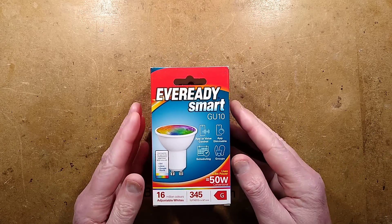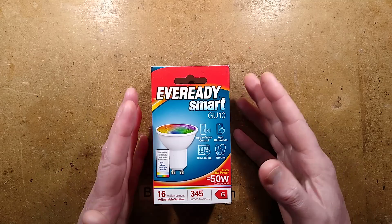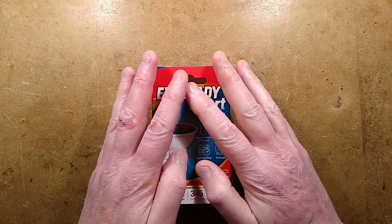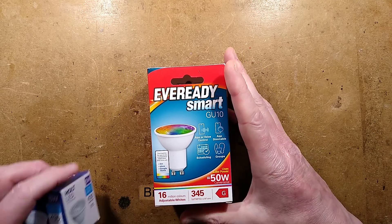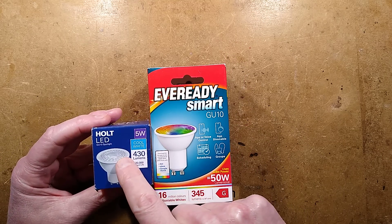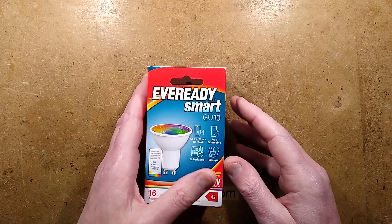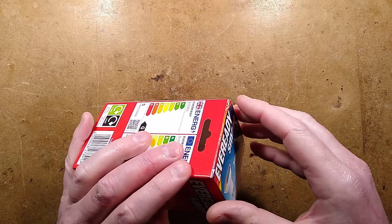This is an Ever-ready smart Wi-Fi controlled GU10 LED lamp. You can tell it's very special because it came in a big box, as opposed to this normal non-intelligent GU10 lamp from Poundland in the UK.